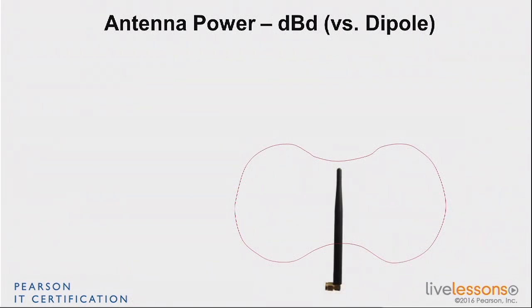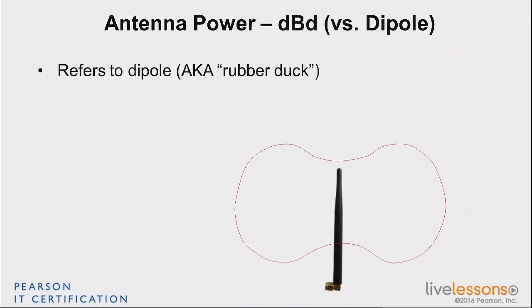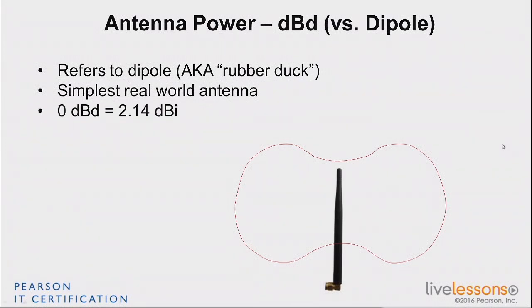Some people don't like to use the isotropic antenna — less and less today, but you'll still find people saying it's not fair to use something that doesn't exist as a reference. If I talk about 1 milliwatt, there is a real 1 milliwatt current. So let's use something that exists. They use as a reference the simplest, most basic antenna you can make, which is called a dipole antenna — also called a rubber duck. It's the cheap antenna you get with cheap Wi-Fi hardware. That antenna has a radiation pattern which is not exactly perfect, but it's simple. And we can compare it to a dBi antenna anyway, because a rubber duck is 2.14 dBi.